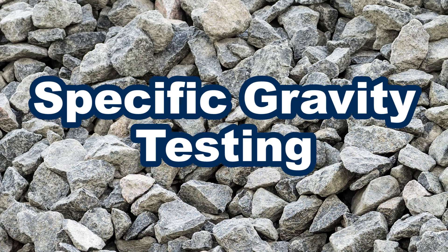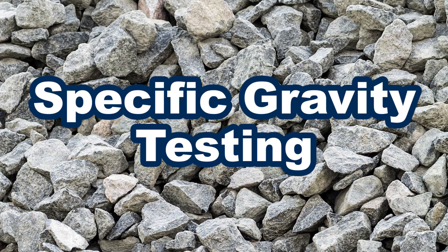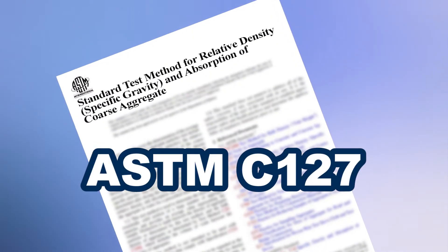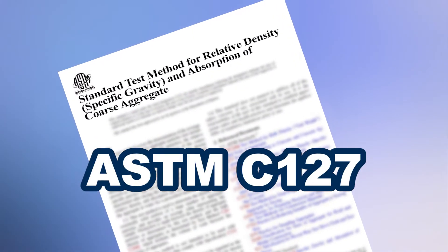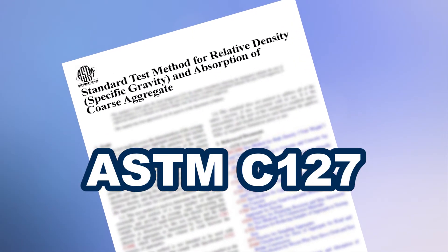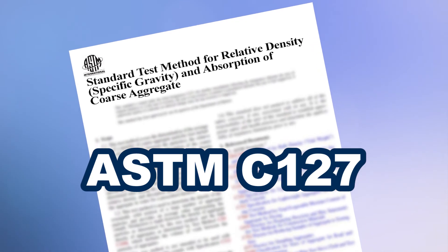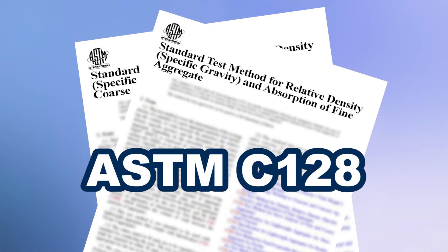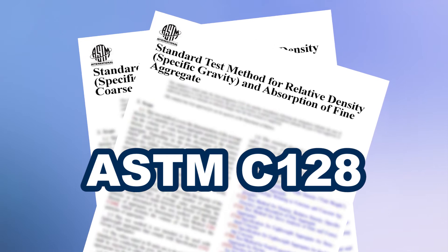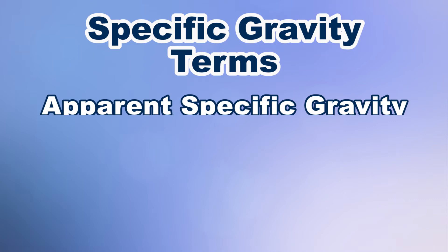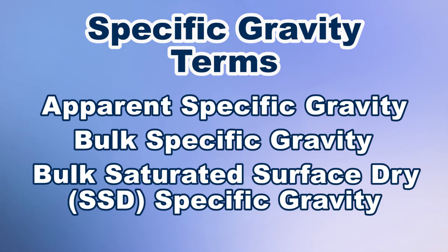The two most common test methods to determine specific gravity are ASTM C-127, the standard test method for relative density and absorption of coarse aggregate, and ASTM C-128 for fine aggregate. Test values can then be calculated for three different types of specific gravity.